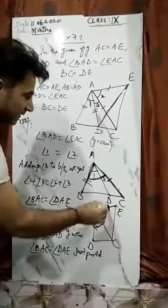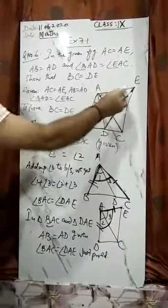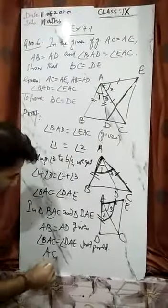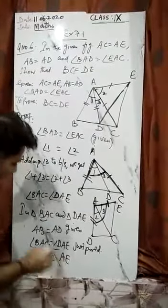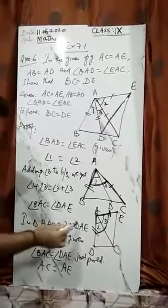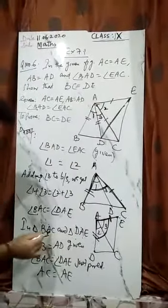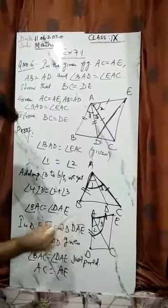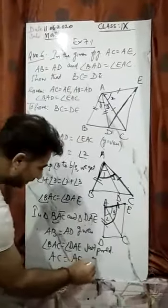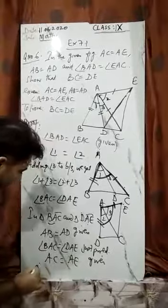And the third thing, this triangle's AC is equal to this triangle's AE. AC and AE are equal, so AC is equal to AE. Now see the correspondence: AB corresponds to AD, angle BAC to angle DAE, and AC corresponds to AE. This was given.